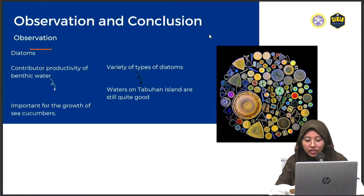The diversity of diatoms in the digestive tract of Neocambar synaptamaculata indicates that it is a deposit feeder organism highly dependent on the availability of food such as plankton in its habitat. The existence of diatoms as a food source plays a very important role for the growth of Neocambar synaptamaculata, because diatoms contribute to the productivity of benthic waters.